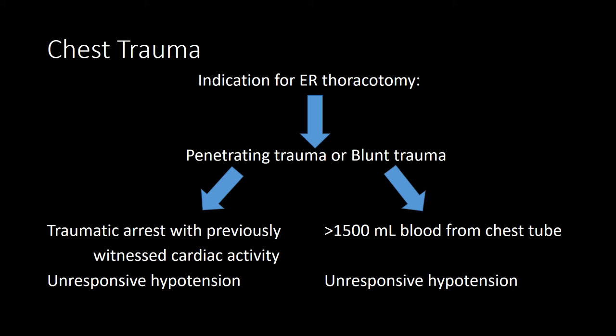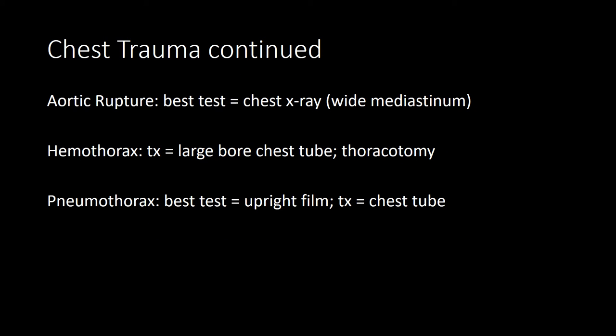Pulmonary contusion develops within the first 24 hours and resolves within one week. It often doesn't appear on initial X-ray but is associated with rib fractures. Place the patient with the unaffected lung down (dependent position). Treatment is pain control, pulmonary toilet, and fluid restriction.